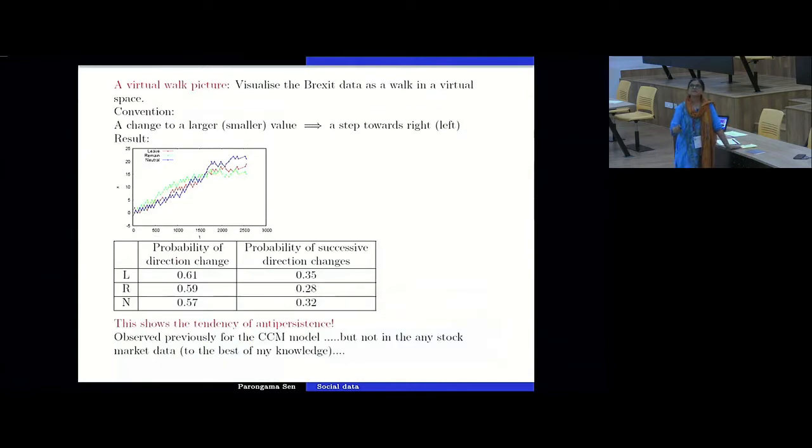And this is another representation of the time series once again. What we do is here is the convention is if the particular opinion is increased, we assign plus 1, it is like a walker who is going to the right, otherwise to the left. And then this is the picture we get. And from here we compute the probability of direction change, how often you change direction. And you can see how people change direction. So once you are a Trump supporter, tomorrow you are a Clinton supporter and so on. Anyway, so this shows the tendency of anti-persistence because you see that this probability is greater than 0.5 and cannot be explained from a biased random walk or a simple random walk picture.